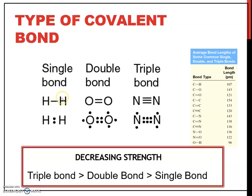Each electron is shared from each atom. For double bond, there are two lines representing two bonds, and triple bond is represented by three lines. Remember, for each line there are two electrons — one electron shared from each atom.